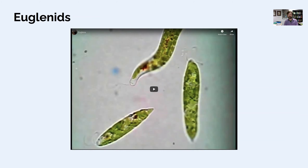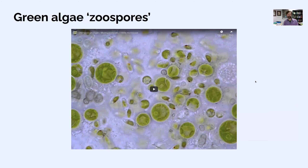There are videos about the euglenids — photosynthetic organisms that do a lot of swimming with their flagella. They've got a red eye spot that helps them orient in their environment. Some examples of swimming green algae: there's a part of their life cycle called zoospores — spores with more of an animal characteristic. They got their name because they have flagella and can swim around. If you're a single cell in the environment, you probably want to swim to get out of harm's way or toward better light and nutrients.